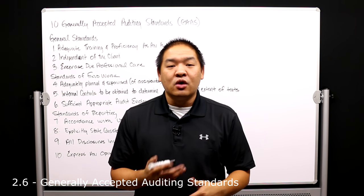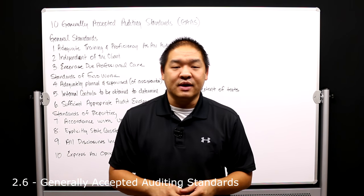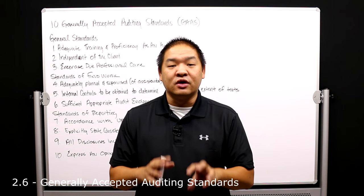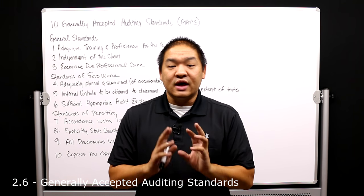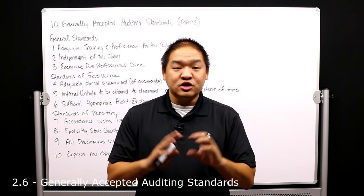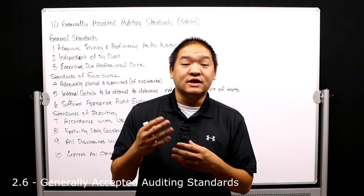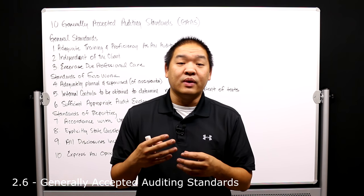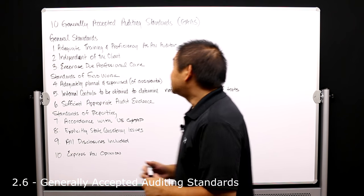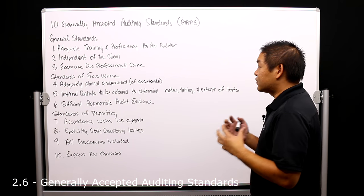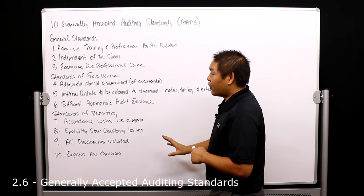As we go through these lessons, we'll modify and add things more specific to public companies. But for this part, we're going to cover the original Auditing Standards Board's 10 Generally Accepted Auditing Standards, which are broad in nature. The 10 GAAS are broken out into three sections: General Standards, Standards of Fieldwork, and Standards of Reporting.